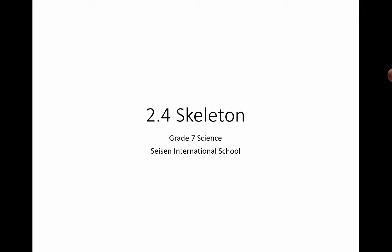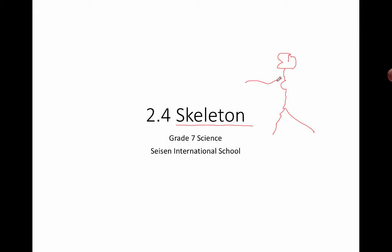We're ready to continue our conversation about structure and function of body systems. Today we're going to be looking at the skeleton. Structure and function are really important when talking about all of these systems, but definitely the skeleton. You should be able to draw what a skeleton looks like. If you like eating ribs, you know there are ribs here — part of the structure is to protect the internal organs.